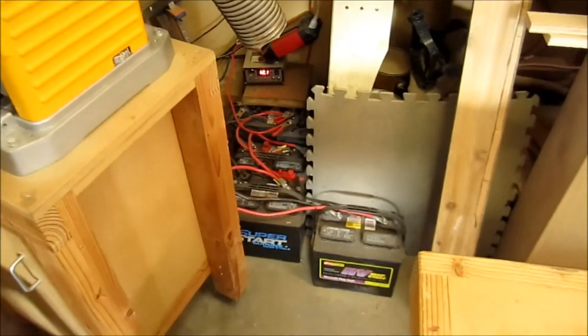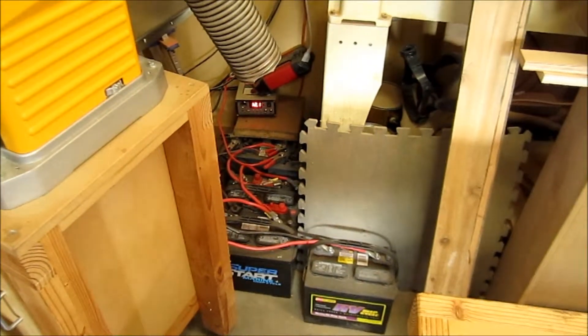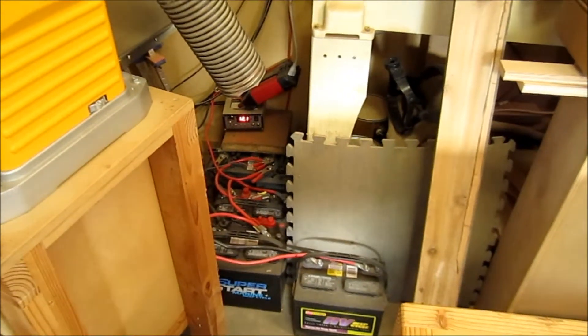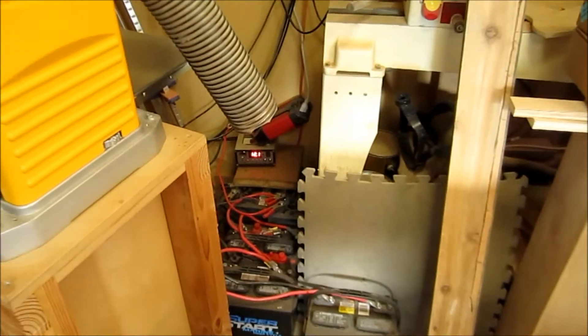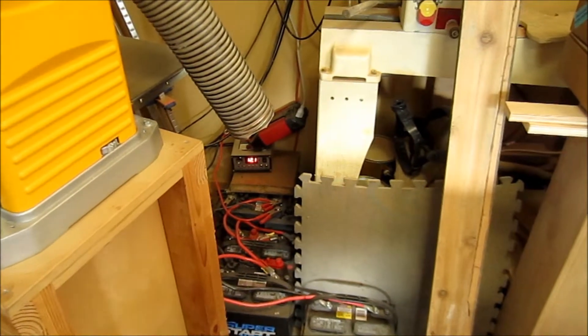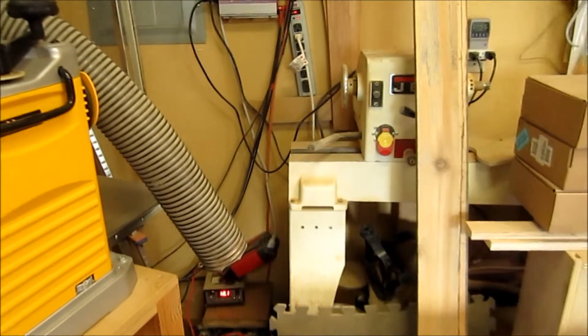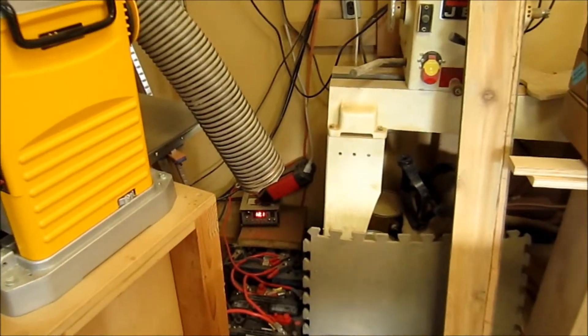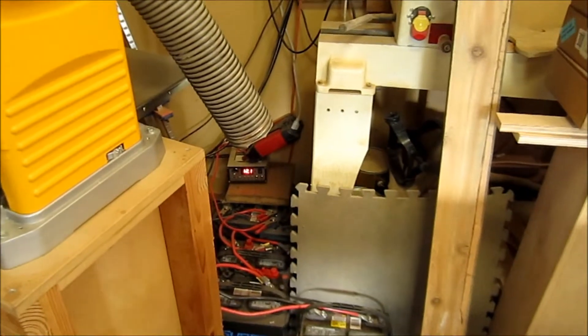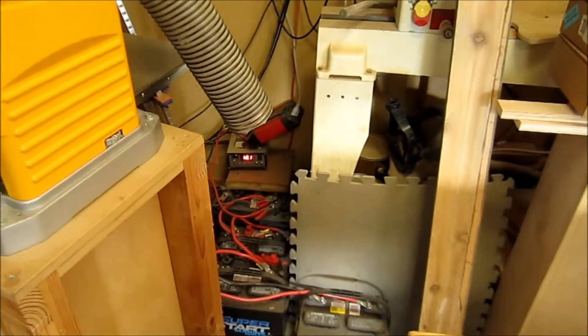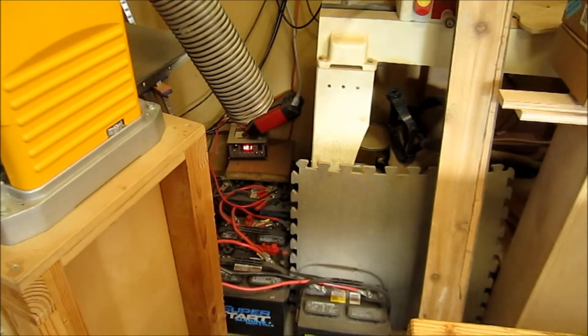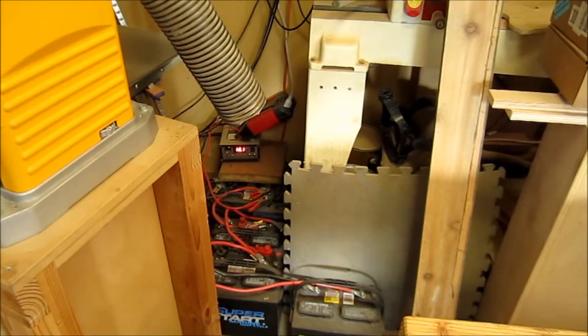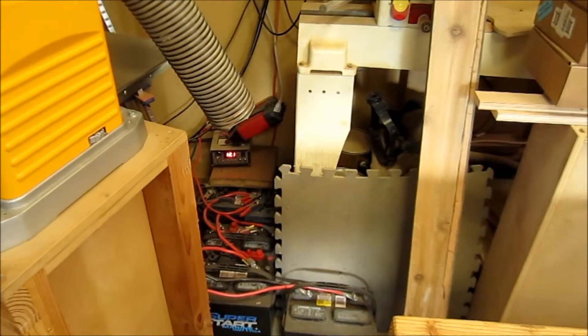And they're all tied together with that little Harbor Freight charge controller, and then the red inverter right there I have running to this power strip which is powering some lights in my shop. So that 45-watt panel that's outside on the ground runs to this charge controller and keeps this battery bank full. And then I use the electricity from the bank to run lights in the shop.